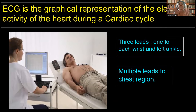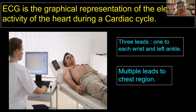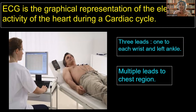Electrocardiogram is the graphical representation of the electrical activity of the heart during the cardiac cycle. The cardiac cycle contains mainly three phases: atrial systole, ventricular systole, and cardiac diastole. Whether the heart is functioning properly or not is represented by the electrical activity of the heart, which is nothing but our ECG. So ECG is a graphical representation of electrical activity of the heart during the cardiac cycle.